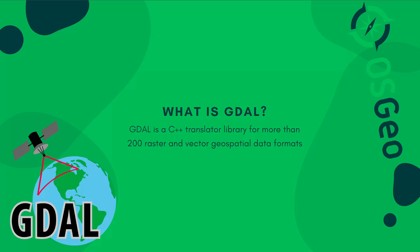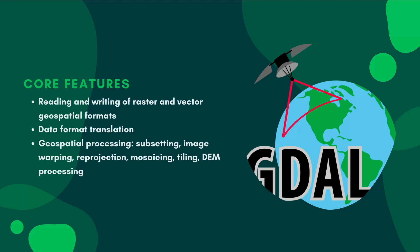GDAL has taken care of all the worries, stresses, and implementations you need to handle in order to perform vector and raster processing. GDAL is a library used for raster and vector geospatial data format processing. It enables reading and writing of raster and vector geospatial formats.